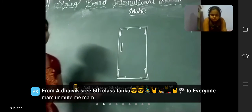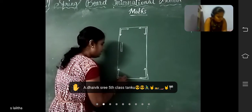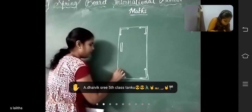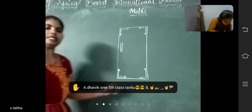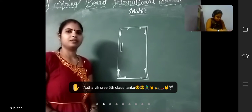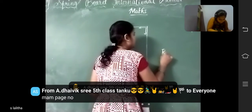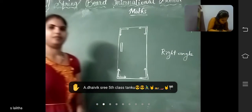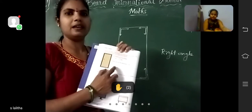What can you say about this angle? See here — horizontal ray and vertical ray. It forms an angle. What do you call this angle, children? Which type of angle is this? Right angle. What do you call it? Right angle.